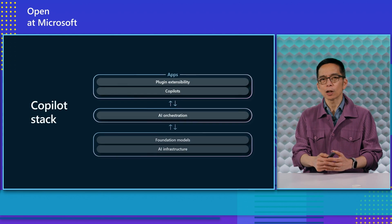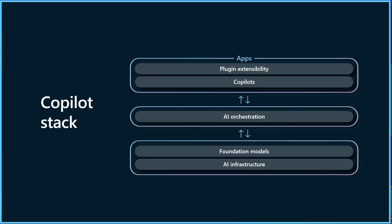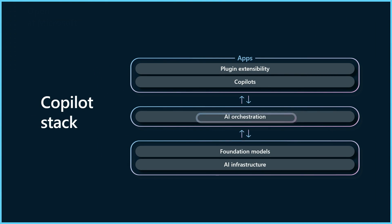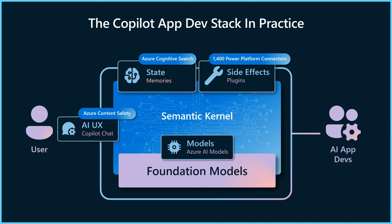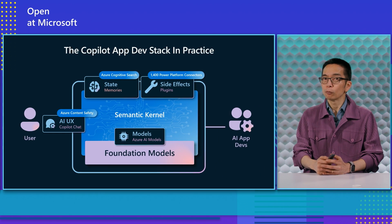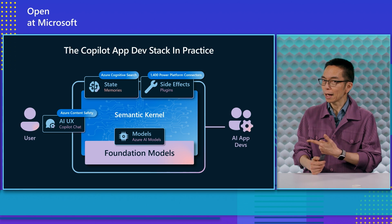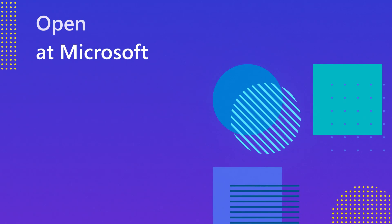And there's a diagram that lays it out. Semantic Kernel is that juicy AI orchestration layer right in the middle. And if you zoom into that, it's a whole playground of enterprise-class parts to build a co-pilot app yourself. What we're going to hear in the next episode is Evan walking us through that co-pilot chat. Let's do it.